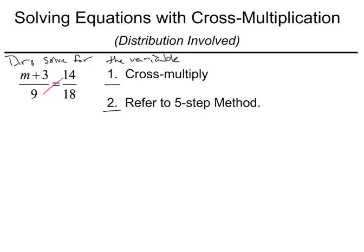We'll draw our cross multiplication symbol. And we'll see that we have 14 times 9 is 126. And then we're going to set that equal to, now we have 18 times the quantity of m plus 3.